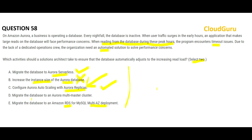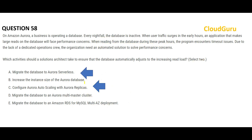Option D says to migrate the database to a multi-master cluster. In multi-master, the writes are done across multiple clusters — it is a write solution, not a read solution. We need to solve the read problem, there is no write problem, so we cross this out. Option E is a disaster recovery solution, not a solution to enhance read performance. The final answers are A (Aurora Serverless) and C (Aurora Replicas).